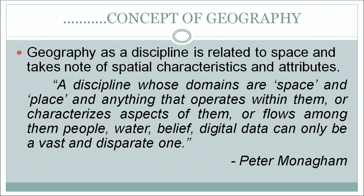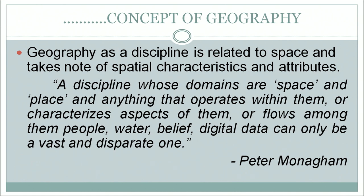When we consider the characteristics of geography, we can categorize them in three points. The first is that geography as a discipline is related to space and takes note of spatial characteristics and attributes. Peter Mongham has also supported this by defining geography as a discipline whose domains are space and place, and anything that operates within them — people, water, belief, digital data. Spatial characteristics means consideration about people's ideas moving from one place to another.